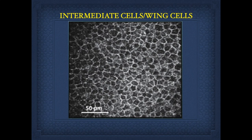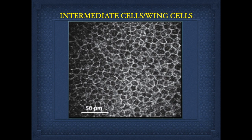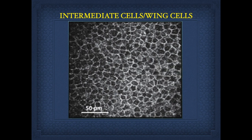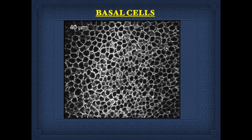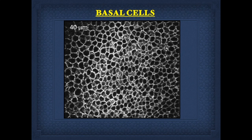Intermediate cells or winged cells have bright cell borders and dark cytoplasm, although the cell nucleus is difficult to identify. The winged cells display only minimal variation in terms of size and appearance. Basal cells have brighter cell borders, homogenous cytoplasm, and the nucleus is also difficult to identify.